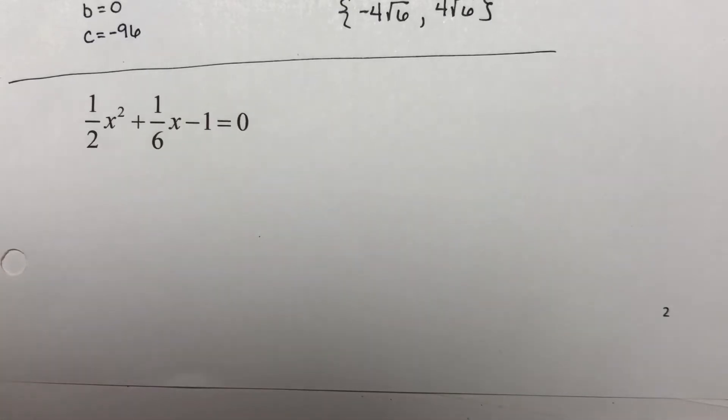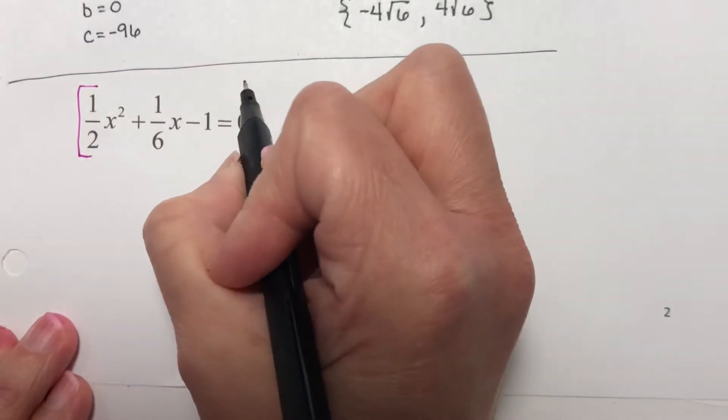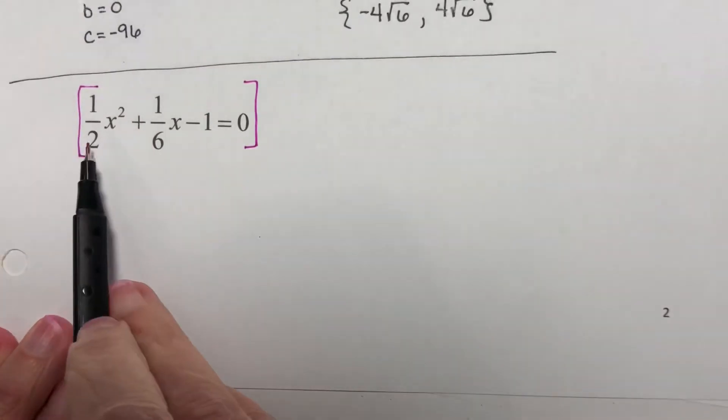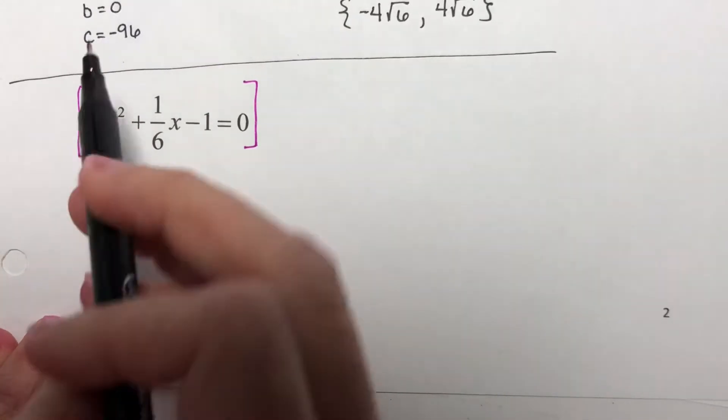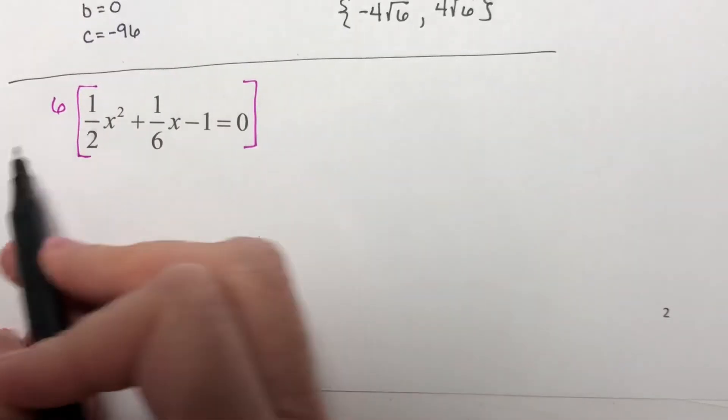But most of us aren't going to like that. And the good thing is that we can still clear the fractions and this will work. Remember to get rid of the fractions or to kill the fractions, we multiply by the LCD. My denominators are 2 and 6, my LCD would be 6. So I'm going to multiply everything in here by a 6.